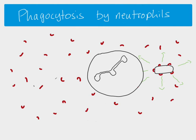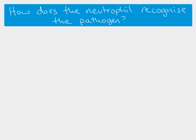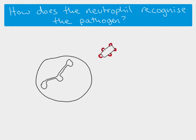The neutrophil is attracted to the pathogen and moves towards it, and then the process of phagocytosis can take place. The neutrophil has to recognize the pathogen as a non-self cell that needs to be destroyed. The neutrophil has receptors in its cell surface membrane that are able to bind to the complement proteins, and therefore it recognizes the complement proteins — which means they must be bound to a pathogen.